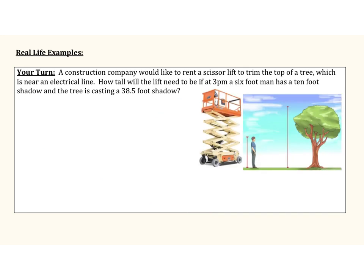For our next example, a construction company wants to rent a scissor lift to trim the top of a tree near an electrical line. At 3 p.m., a six-foot-tall man has a 10-foot shadow and the tree is casting a 38.5-foot shadow. Go ahead and set up two triangles to represent this scenario, then use similar ratios to solve for the missing height. Hit pause now and try this on your own.